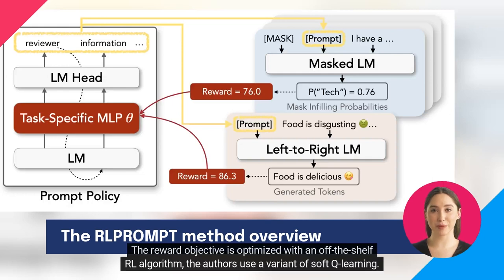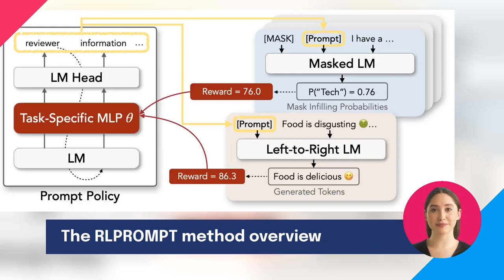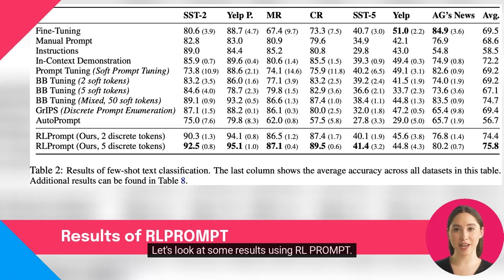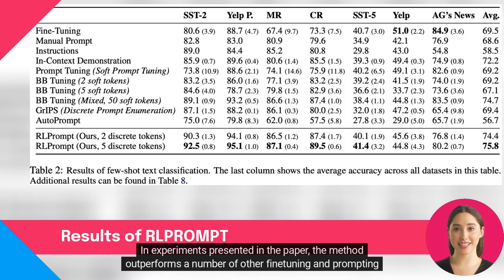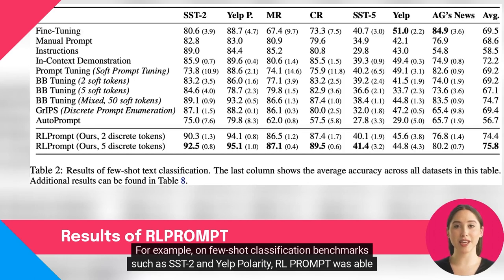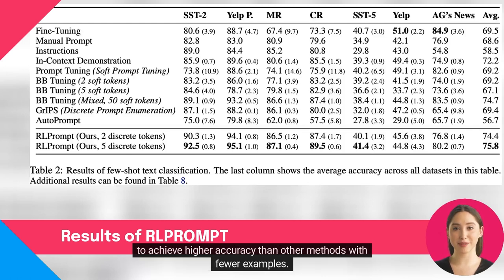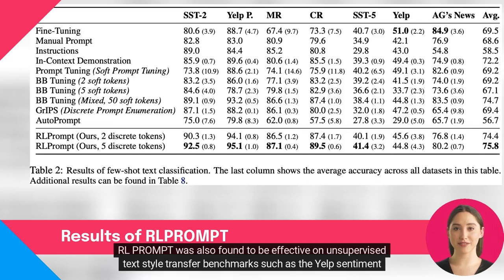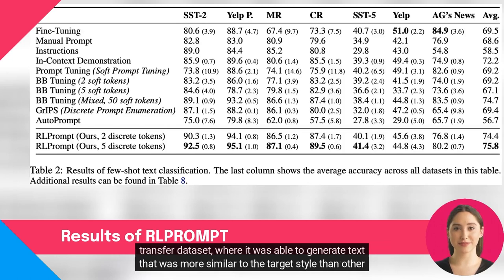The reward objective is optimized with an off-the-shelf RL algorithm; the authors use a variant of soft Q-learning. In experiments presented in the paper, the method outperforms a number of other fine-tuning and prompting methods, achieving strong results on a wide range of tasks. For example, on few-shot classification benchmarks such as SST-2 and Yelp polarity, RL Prompt was able to achieve higher accuracy than other methods with fewer examples. RL Prompt was also found to be effective on unsupervised text-style transfer benchmarks, such as the Yelp sentiment transfer dataset, where it generated text more similar to the target style than other methods.